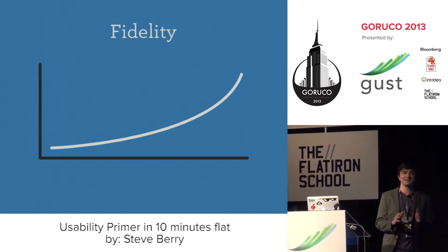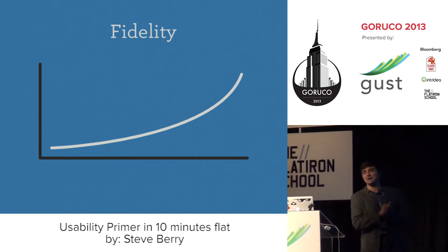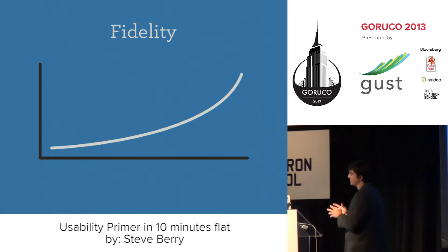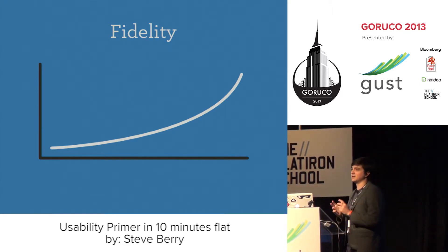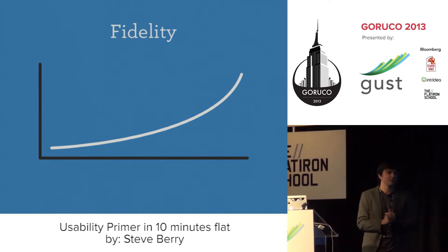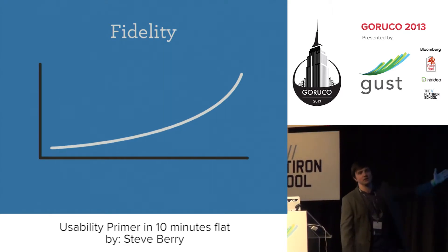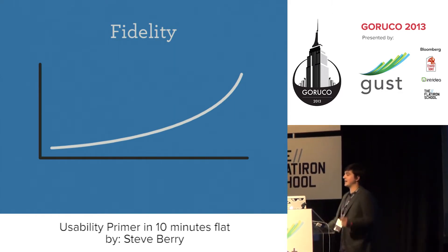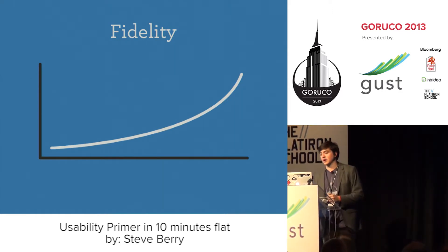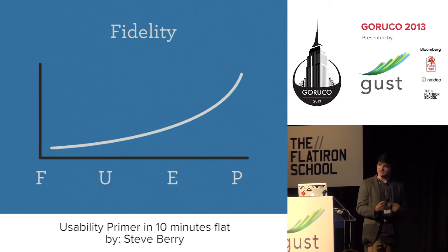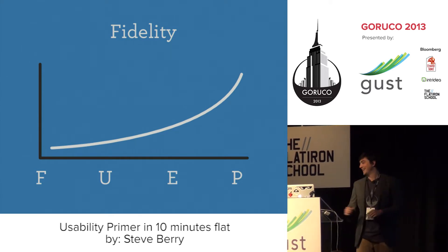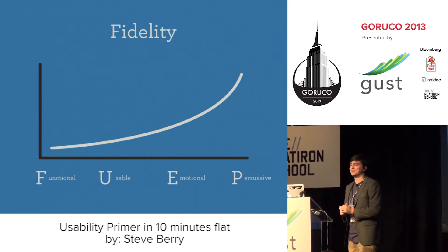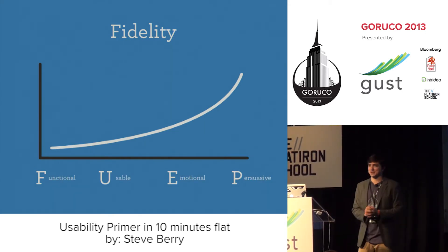So back to the topic. We're going to talk about usability for web apps and web experiences. There's pretty much a fidelity chart — low fidelity and high fidelity. The acronym I like to use to categorize these things is FOOP, which means functional, usable, emotional, and persuasive.